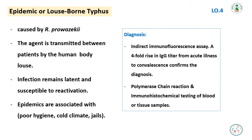Epidemic or louse-borne typhus is caused by Rickettsia prowazekii. The agent is transmitted between patients by the human body louse. Infection remains latent and susceptible to reactivation. Epidemics are associated with poor hygiene conditions in crowded places. Diagnosis uses indirect immunofluorescent assay, a 4-fold rise in IgG titer from acute illness to convalescence, and polymerase chain reaction or immunohistochemical testing of blood or tissue samples.